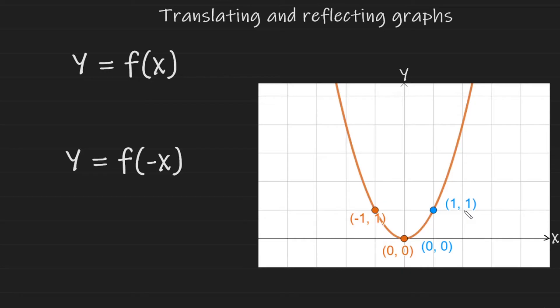If we look at the coordinates, the x values that were positive are now negative. So this one here now becomes a negative one. We can conclude that applying a negative to the inside of the function, so the inside of the bracket, which is also the same as applying a negative to all of the x values, will reflect the graph in the y-axis.